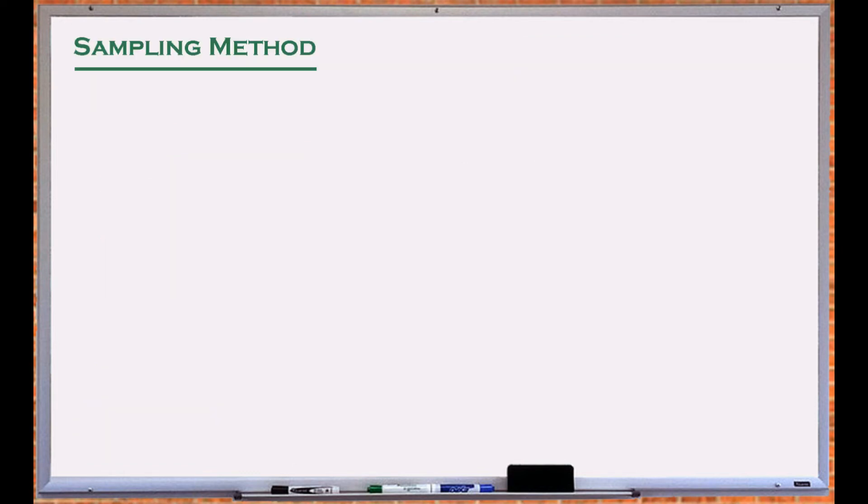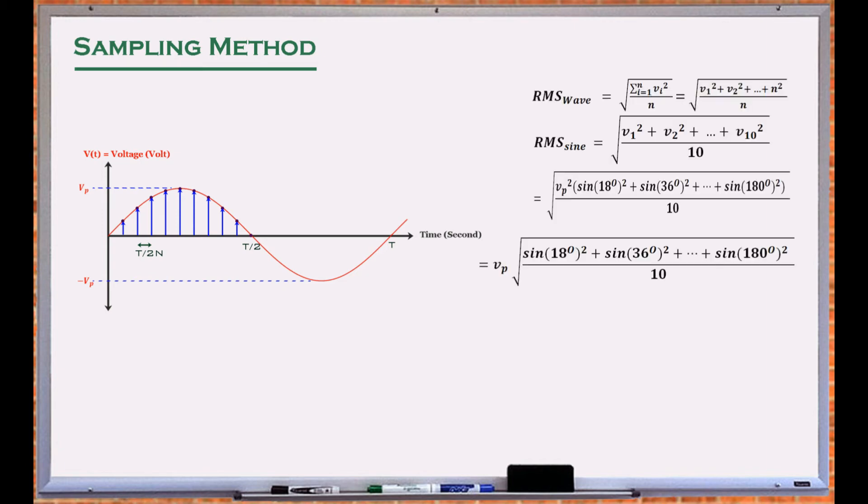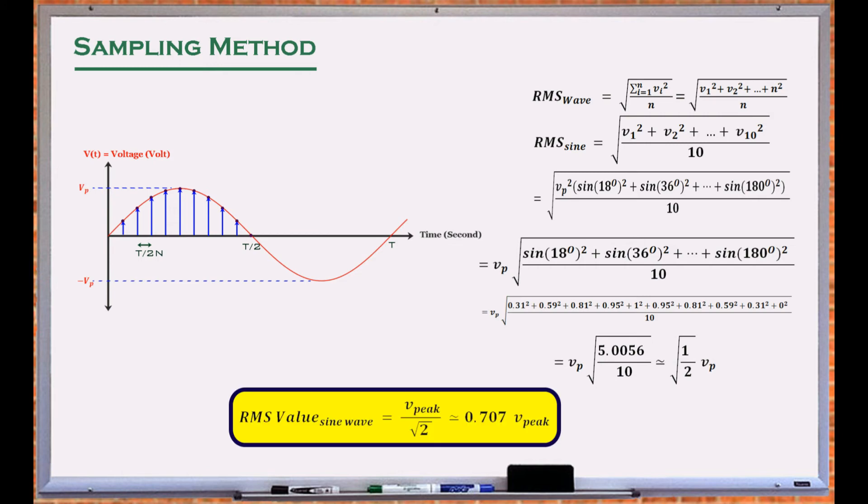We can also use approximation to find the RMS value of the sine wave. Note that the two half cycles of the sine wave generate the same amount of power, making the analysis simpler. Sampling n equally spaced points of the function and applying the RMS discrete equation provides a rough estimate of the RMS value. The accuracy of this method can be enhanced by increasing the number of samples. This method can be used for discrete and random signals.